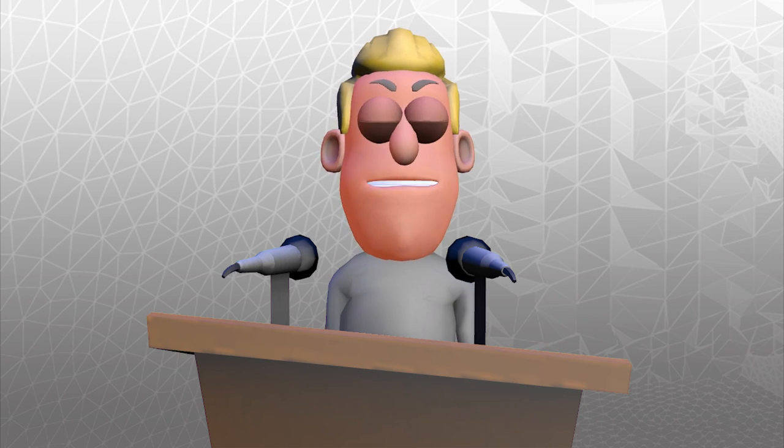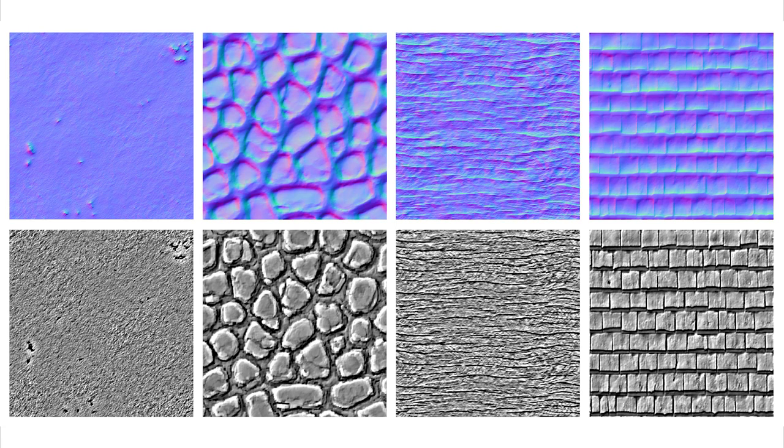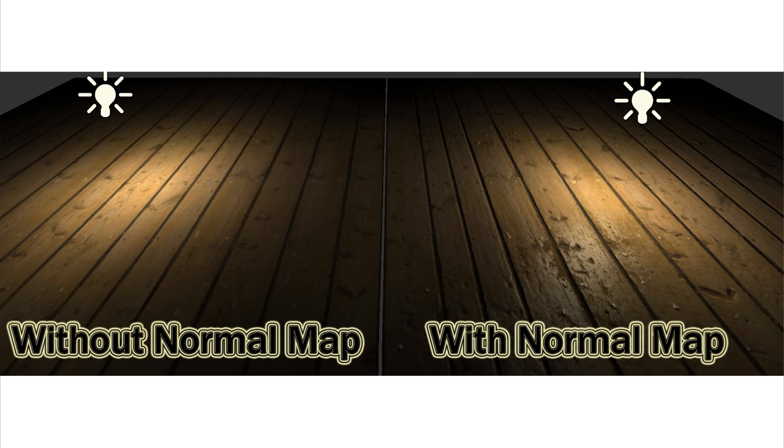A pixel shader is used to calculate effects on individual pixels. Generally these deal with working out what colour each pixel should be, but in doing so have to deal with things such as translucency, shadows, fogging, and lighting. One of the most popular uses for pixel shaders is using bump maps or normal maps to affect how the geometry looks when it is reacting to light.